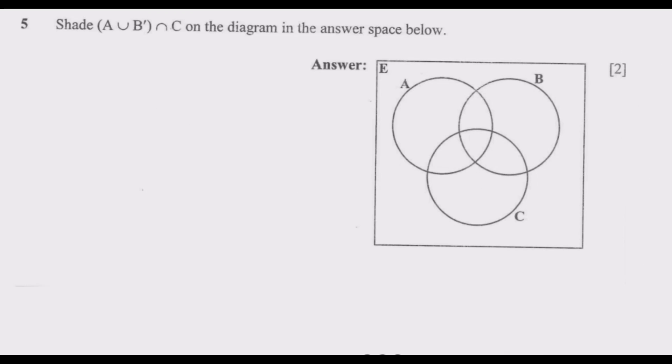Shade (A union B complement) intersection C on the diagram in the answer space below. So what does the question require us to do? The question requires us to shade the region represented by A union B complement, intersection C.